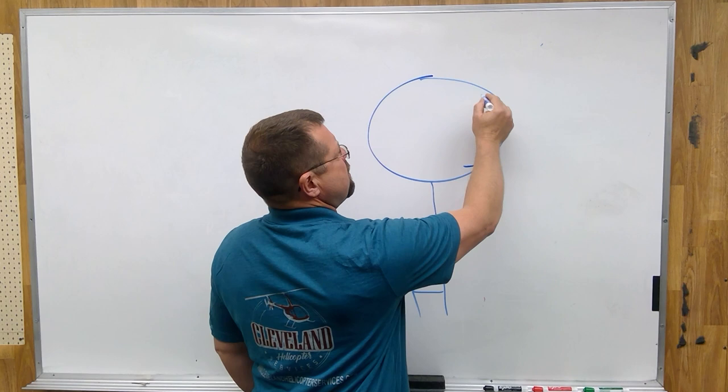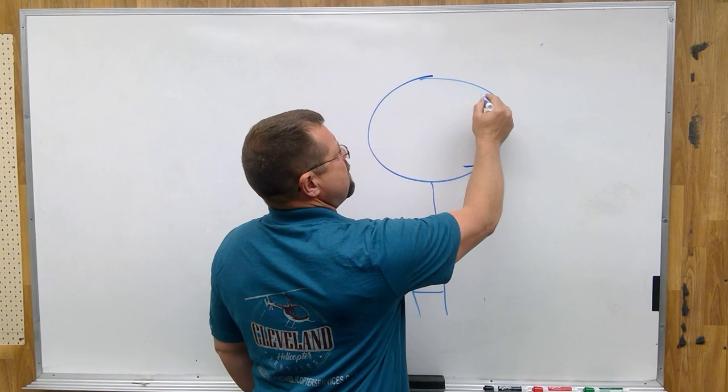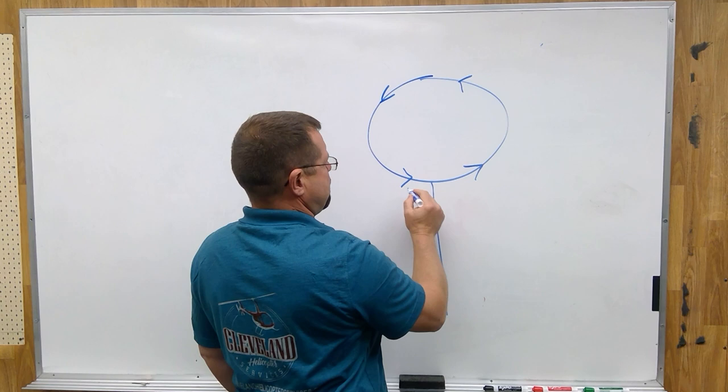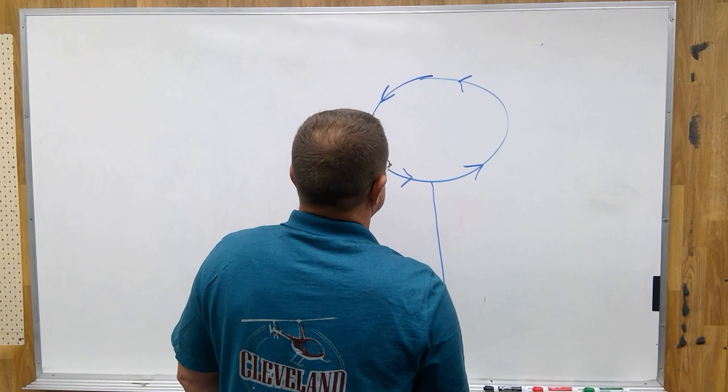Here's my helicopter. For the purpose of this lesson, we will talk about a rotor system that is turning counterclockwise, meaning the tail rotor is on the left, thrusting towards the tailboom.